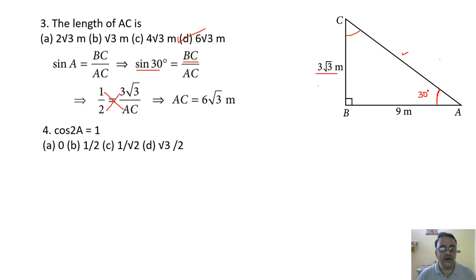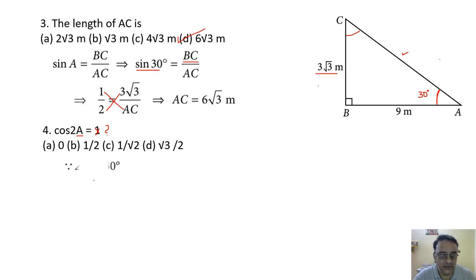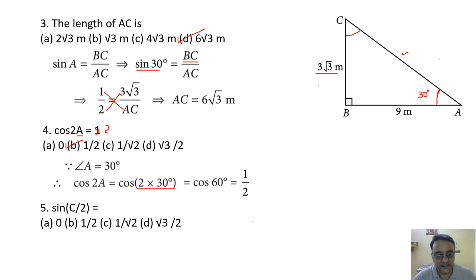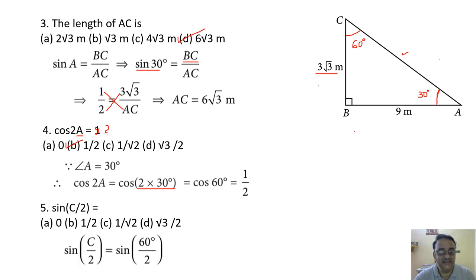Question 4: Find cos 2A. A = 30°, so 2A = 60°. cos 60° = 1/2. The correct option is option B. Question 5: sin(C/2): C = 60°, so C/2 = 30°. sin 30° = 1/2. The correct option is option B.